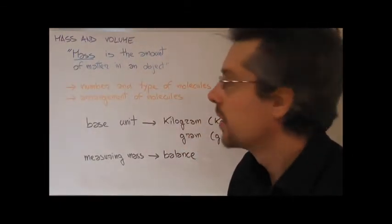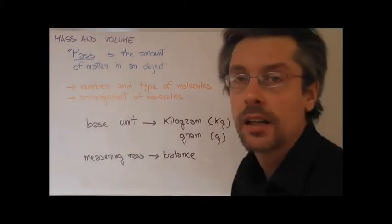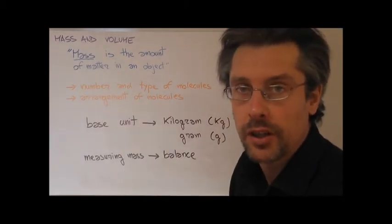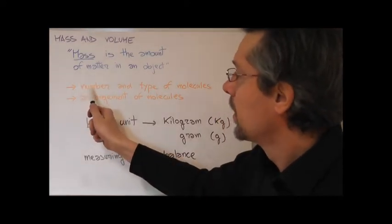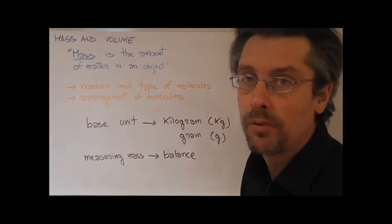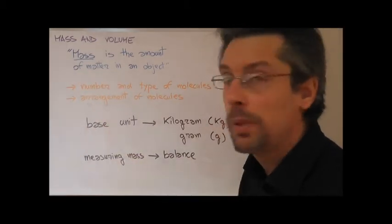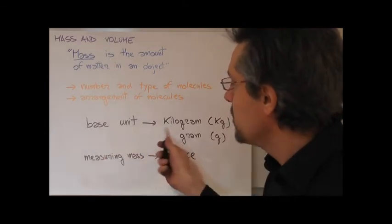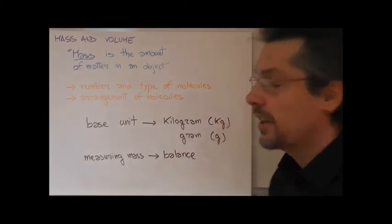First some definitions. Mass is defined as the amount of matter that you can find in an object. Mass is therefore given by the number and type of molecules that are inside that object, and also by the relative arrangement of these molecules. The base unit for mass is the kilogram, symbol kg.